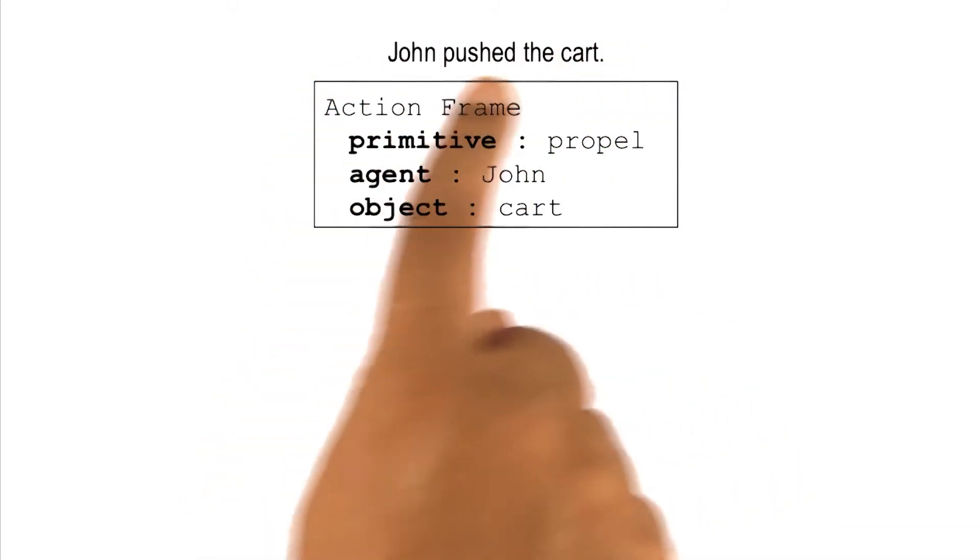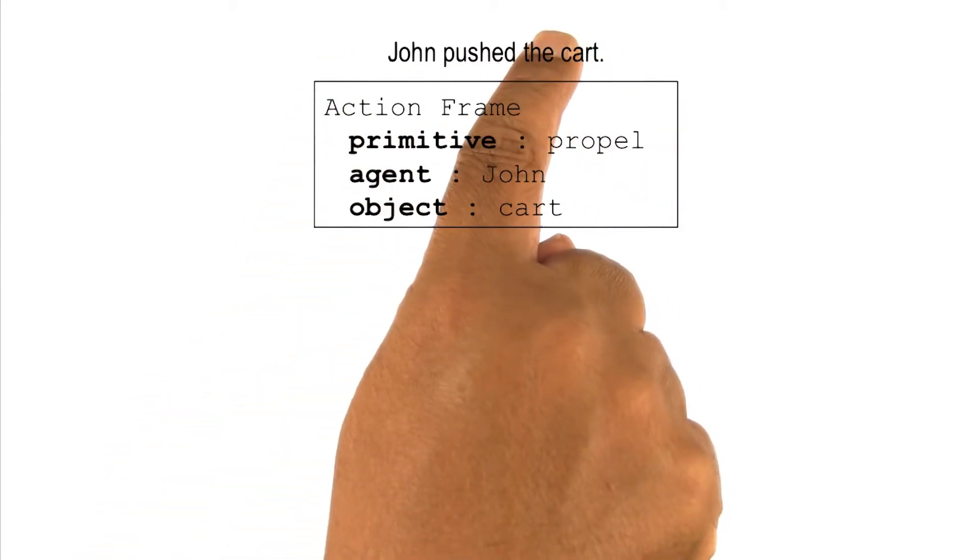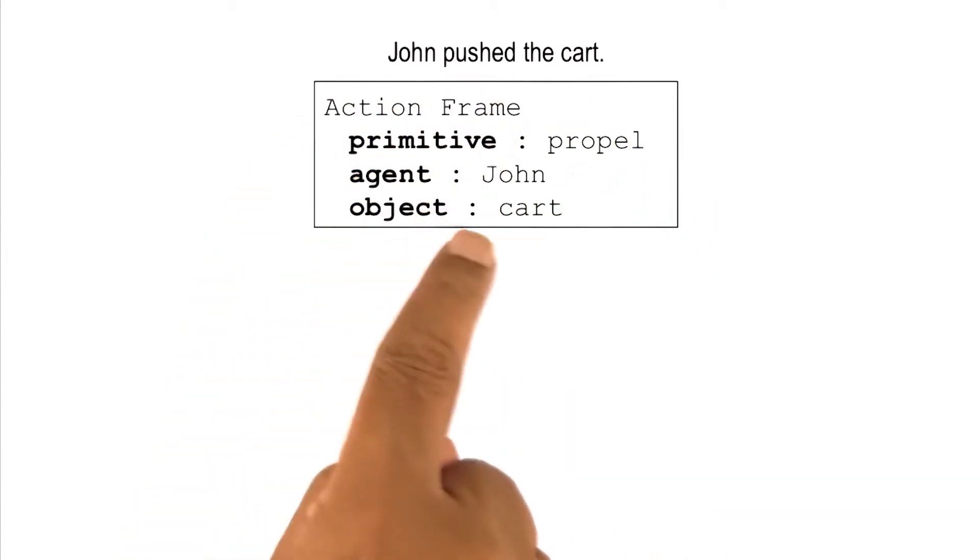It begins bottom up, because we are looking at the data. Right now we don't have knowledge. But as soon as some data is processed, it pulls in knowledge from memory, and soon the processing becomes top down.